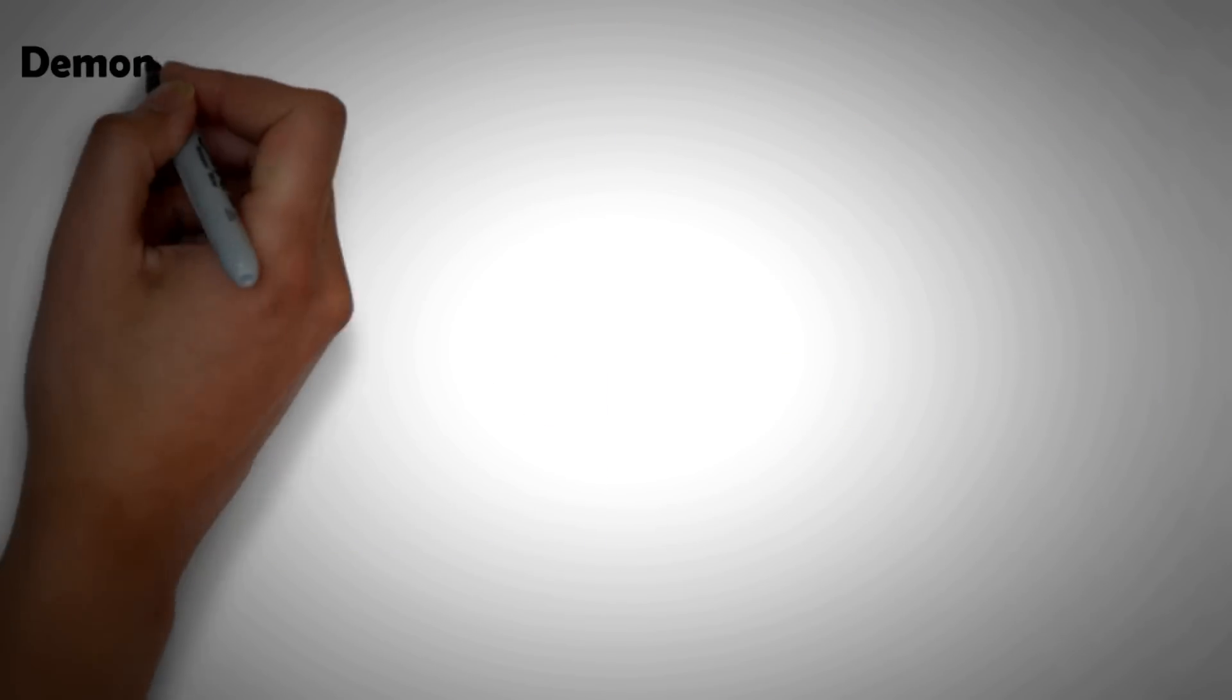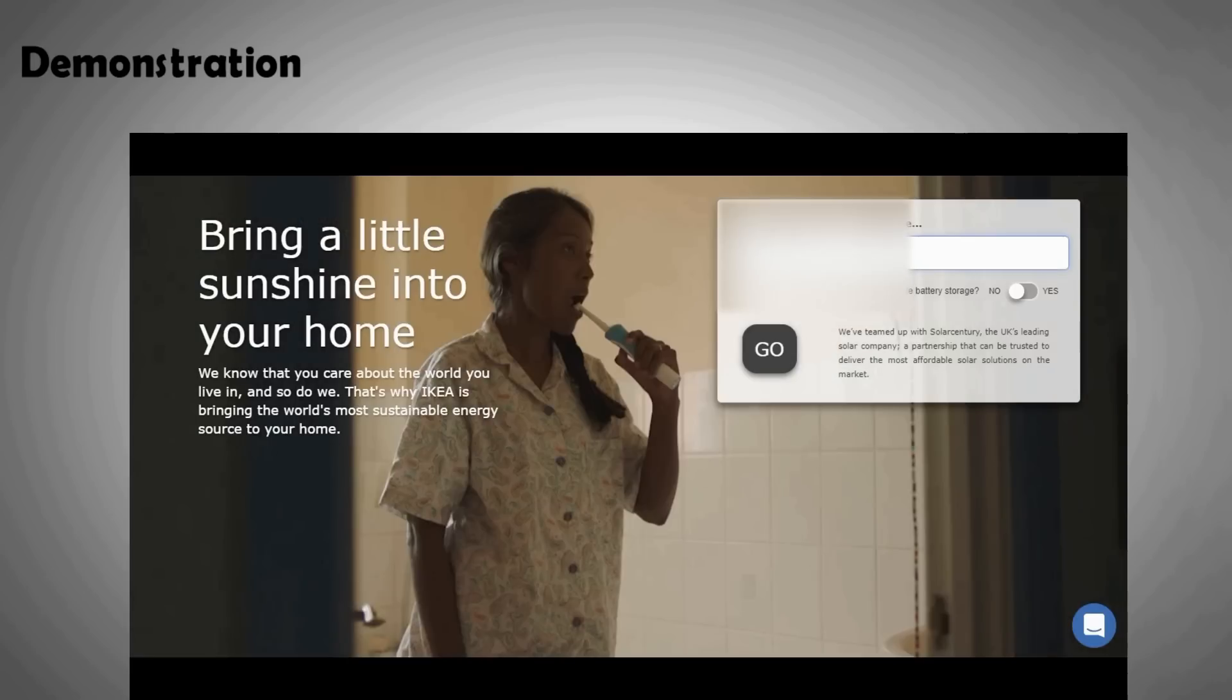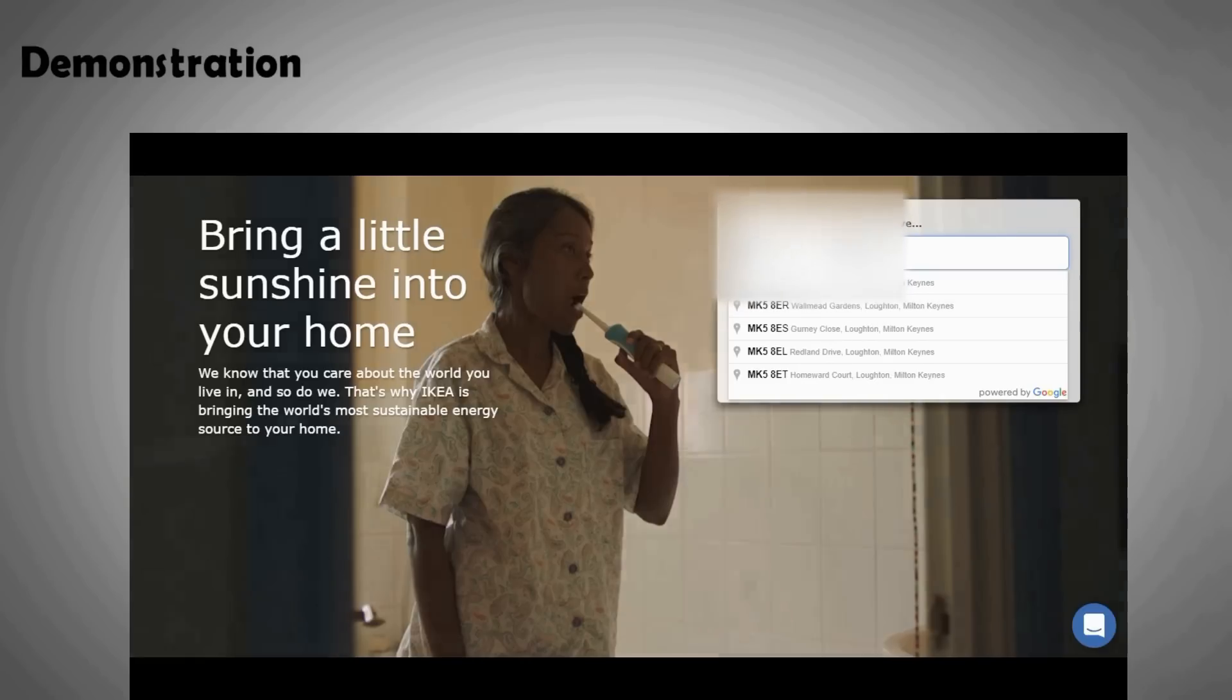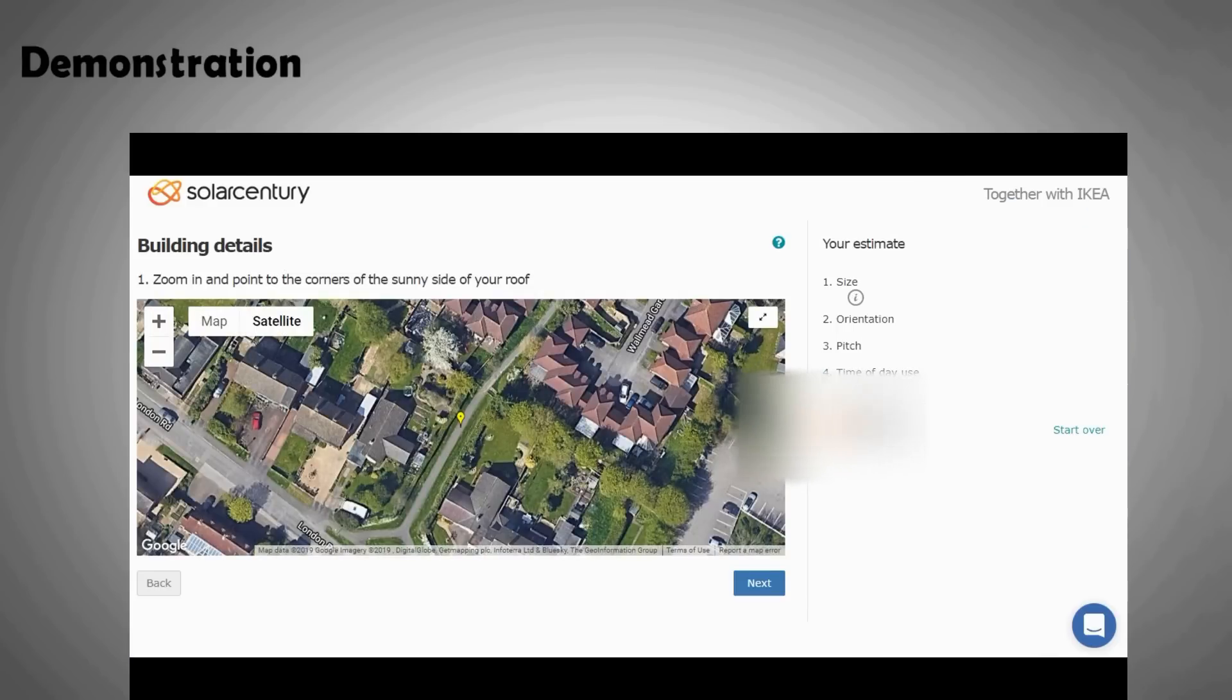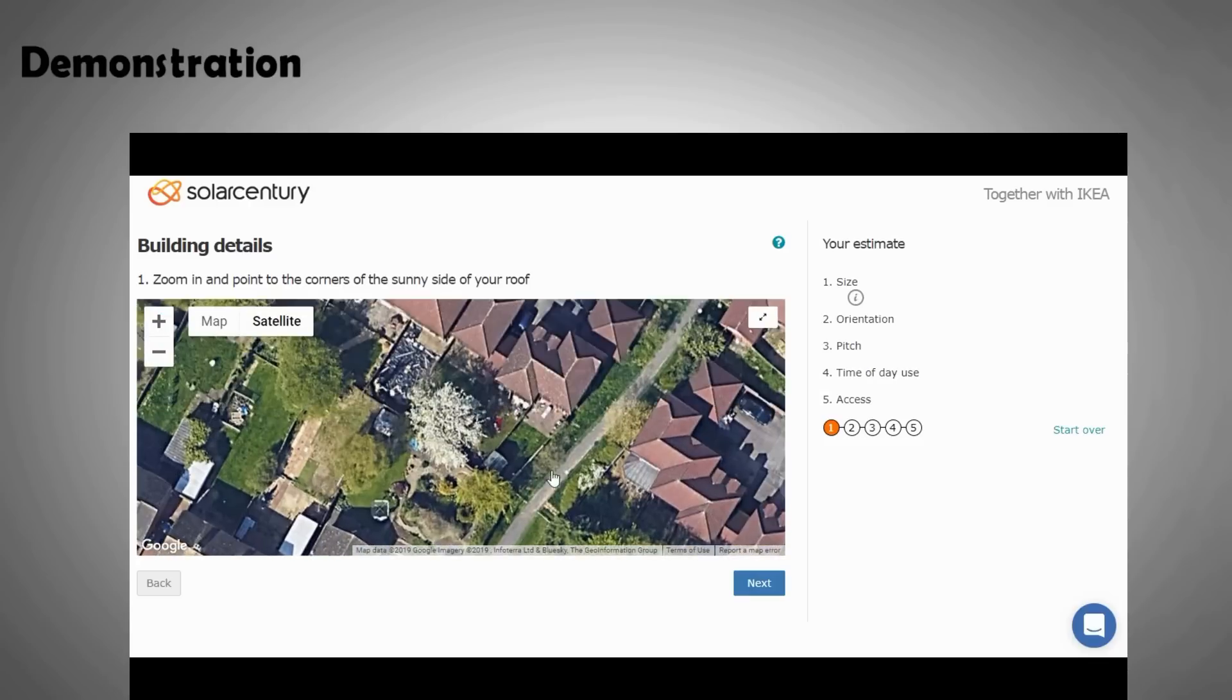I will quickly do an example here for you. This is the IKEA tool. I key in my postcode. Up comes the satellite image of my locality. I select my rooftop. Define my orientation and roof pitch angle.